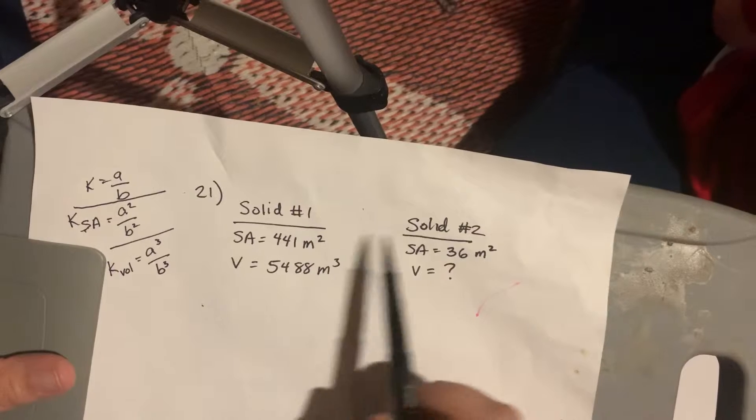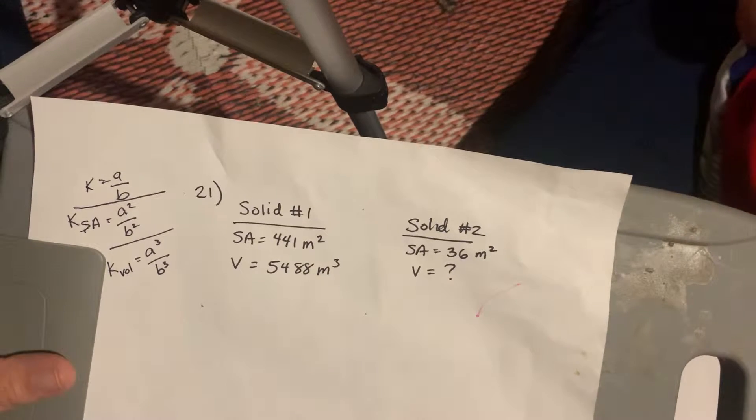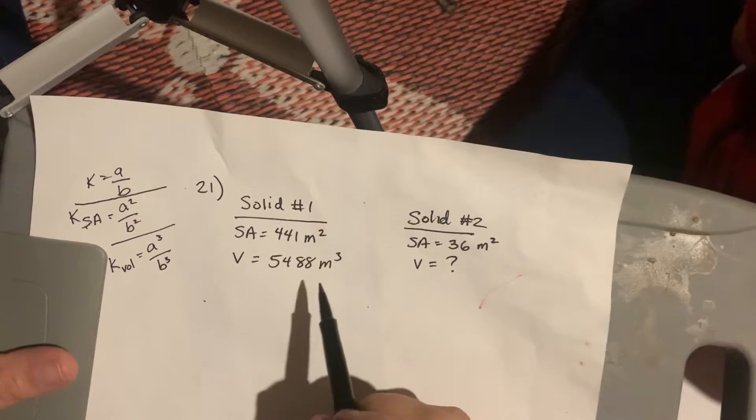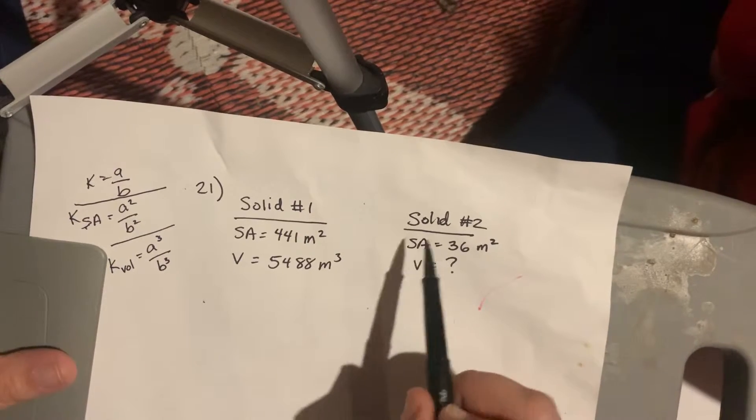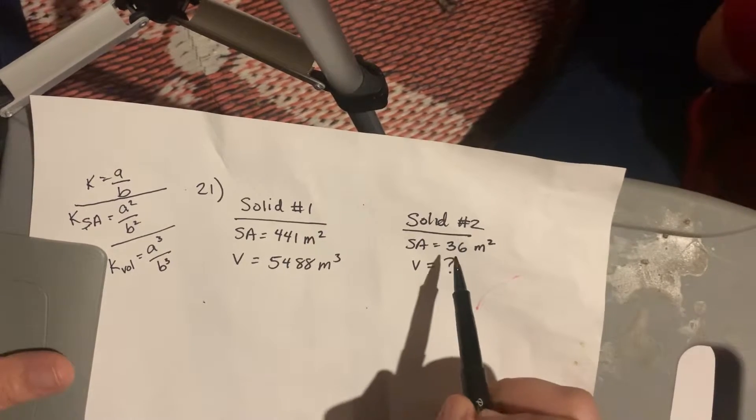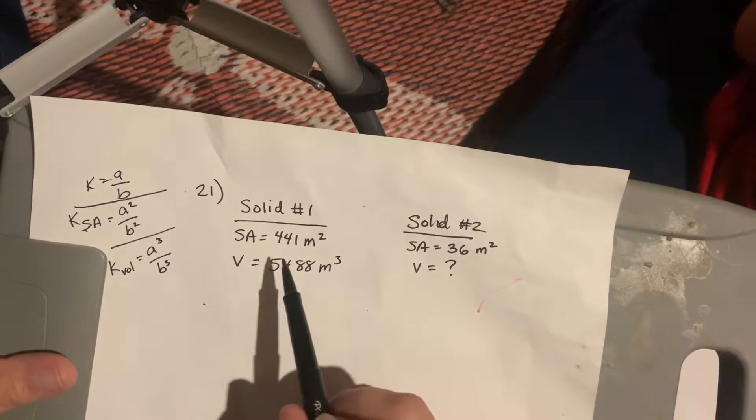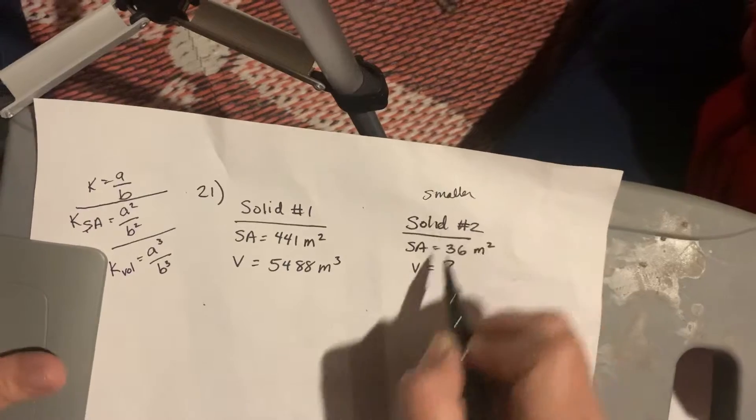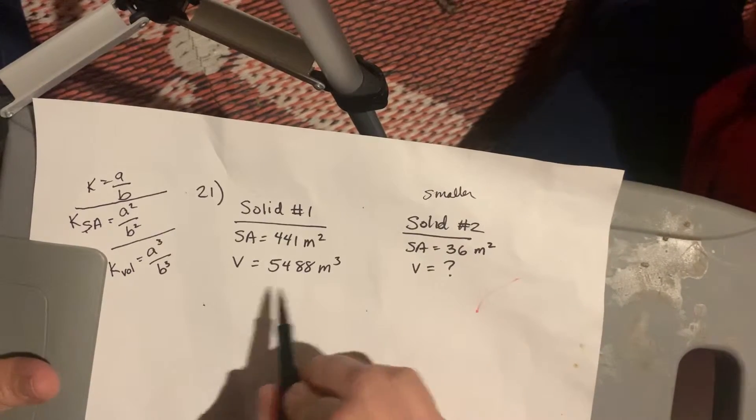So, we need to look at the two solids that we have and the information that they gave us. And, we need to say, well, obviously, this one's the smaller one because see how the surface area is 36 and then this one's surface area is 441. This is our smaller solid, which means the volume we're looking for is going to be smaller than this number.